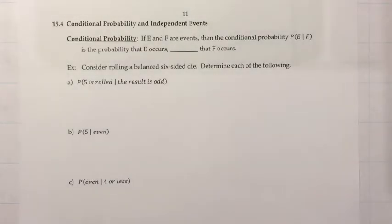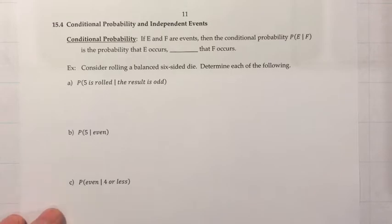Section 15.4, Conditional Probability and Independent Events. I'm going to start off with the definition of conditional probability. If E and F are events, then the conditional probability, the probability of E given F, is the probability that E occurs given that F occurs.